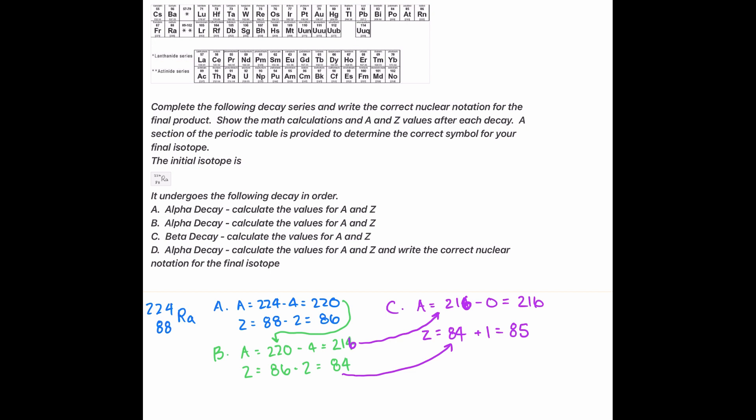We'll do one last one. Part D is alpha decay, so we'll take this 216 and put that in here. We'll minus it by 4 again because it's alpha decay. That's going to give us 212.